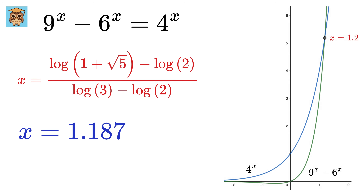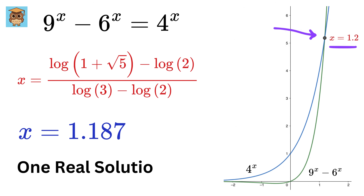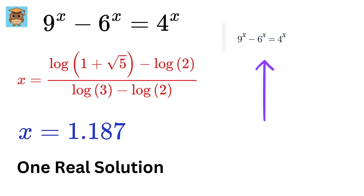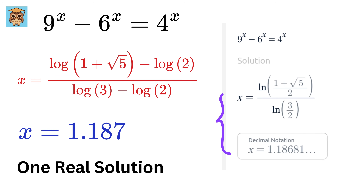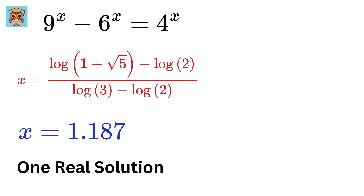From the graph, we saw that there was only one intersecting point, and it was nearly 1.2, and it turns out to be the same. We also proved that we only get one real solution. Finally, when we put this equation in an online calculator, we get the exact same result. Isn't that cool?